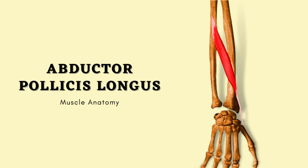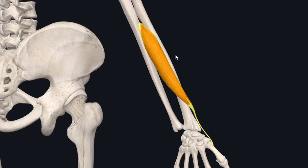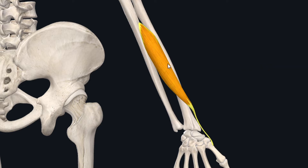Today we will talk about the anatomy of abductor pollicis longus muscle. The abductor pollicis longus is a long fusiform skeletal muscle found in the posterior or extensor compartment of the forearm. It is one of the deep muscles of the posterior compartment, lying deep to the superficial muscles of the extensor compartment of the forearm.